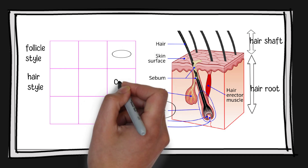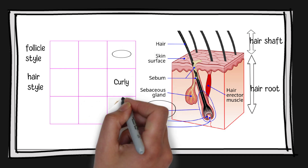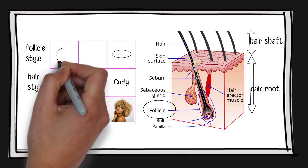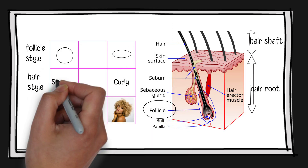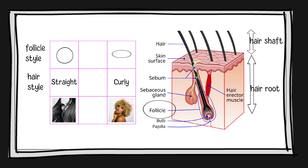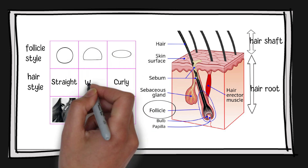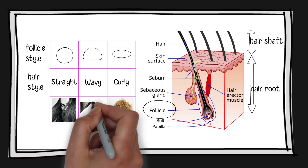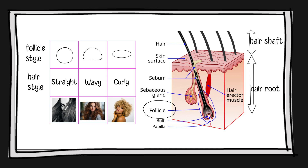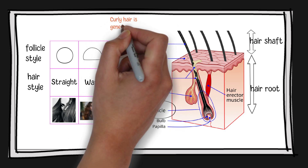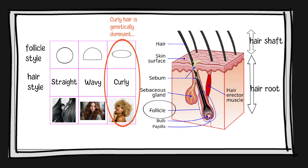Generally, hair with oval follicles tends to be curly, while round follicles typically result in straight hair. Genes play a crucial role in determining your hair texture. Curly hair is an inherited trait and is often dominant.